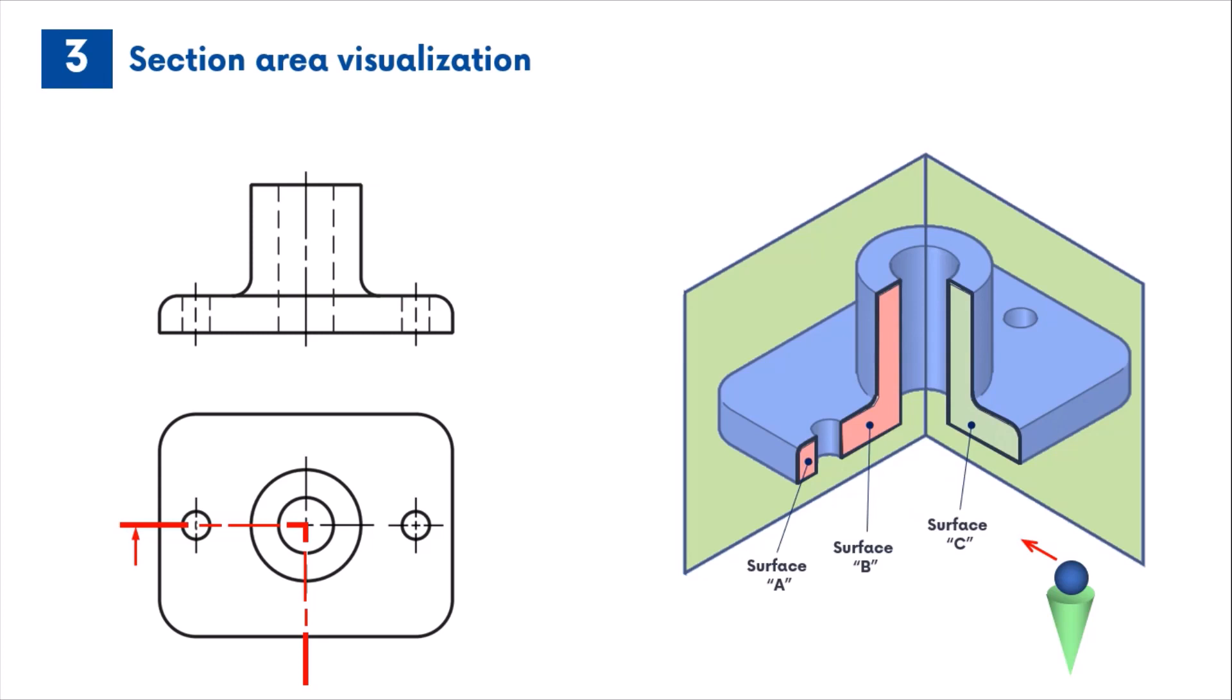The surfaces A and B can be seen in the front view, whereas the surface C is visible in the left side view.